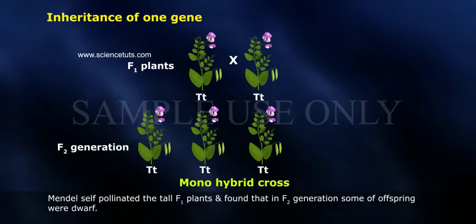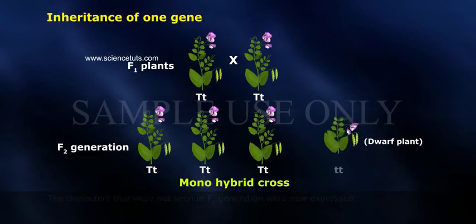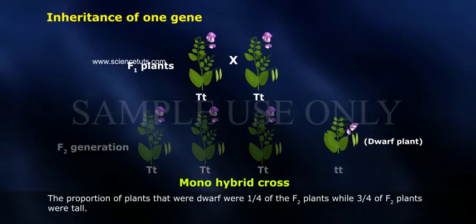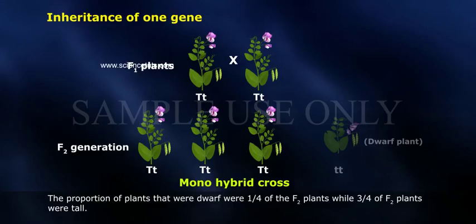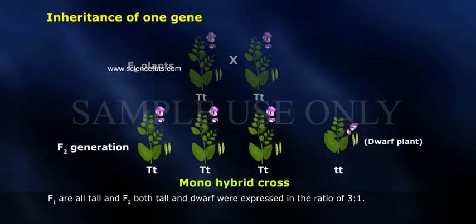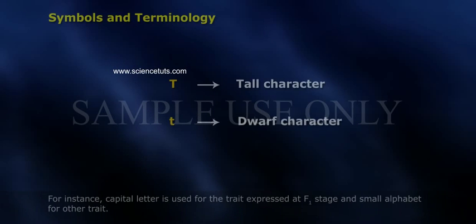Mendel self-pollinated the tall F1 plants and found that in the F2 generation, some of the offspring were dwarf. The characters that were not seen in F1 generation were now expressed. The proportion of dwarf plants was one-fourth of the F2 plants, while three-fourths were tall. F1 were all tall, and in F2 both tall and dwarf were expressed in the ratio of 3:1.